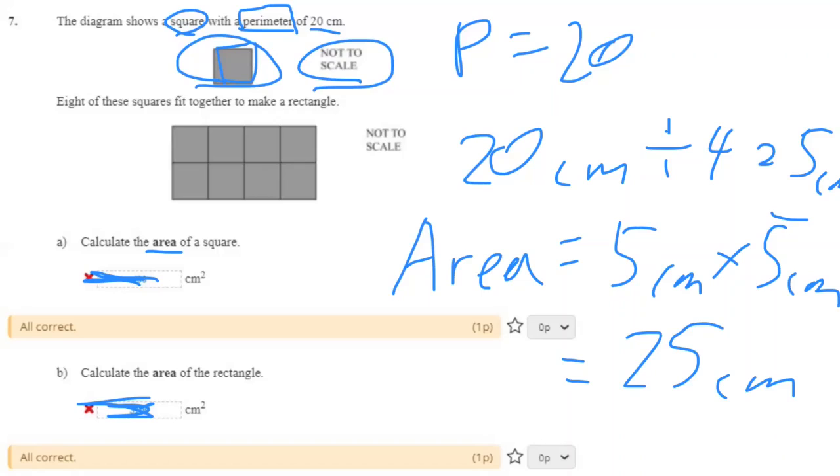All right. We have it for the first one. Answer is 25. Don't need to put the cm². Don't need to put the unit. Because it's already here.